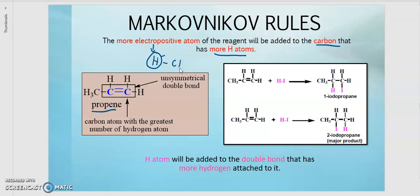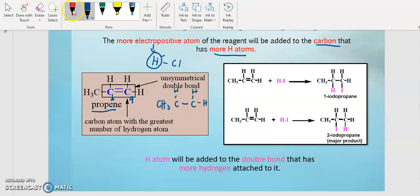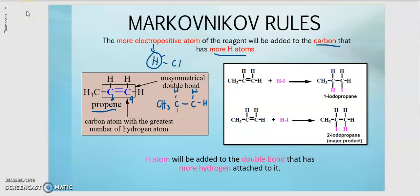Looking at propyne, I label the carbons as A and B. Carbon A has 2 hydrogens, carbon B has 1 hydrogen. If addition reactions occur — the double bond becomes a single bond — and we add HCl, H is the more electropositive atom, so it attaches to carbon A which has more hydrogens. Cl attaches to carbon B which has fewer hydrogens. This orientation follows Markovnikov rules.